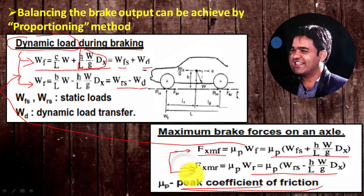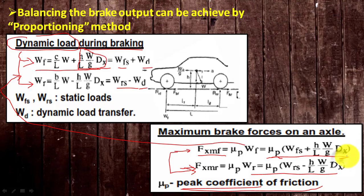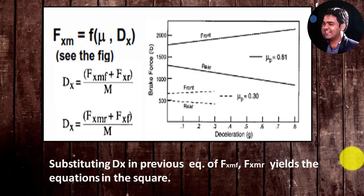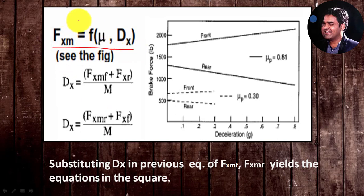By observing these two equations, we can say that the maximum braking force available on each axle depends on two things: peak coefficient of friction mu, and deceleration. Because it depends on deceleration, it is difficult to get an explicit solution for the previous equations.